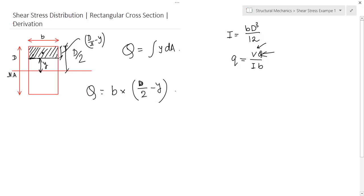So, the area is b into d by 2 minus y. It is the area. Now, we have to multiply this with this distance, the CG distance of the area. Let's calculate it.